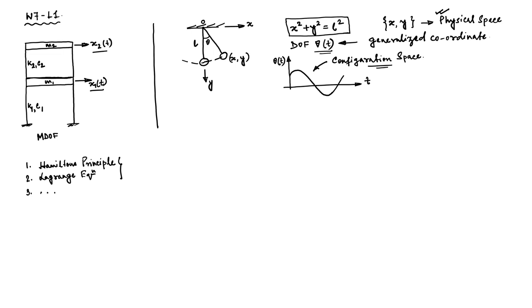These terminologies will be sufficient for now. One important point: if the constraint condition involves x and y only, this type of constraint condition means the system is called a holonomic system. So the constraint conditions are defined by x and y only.